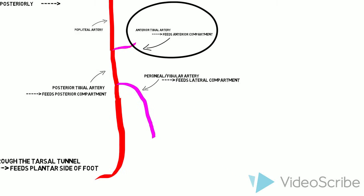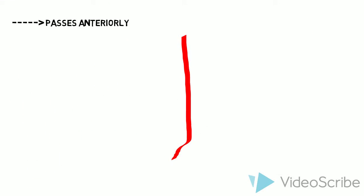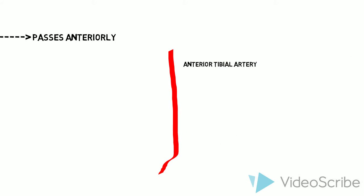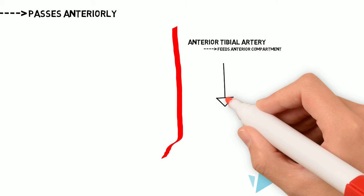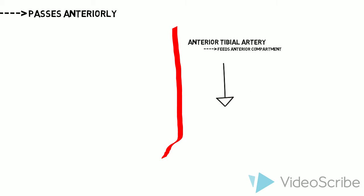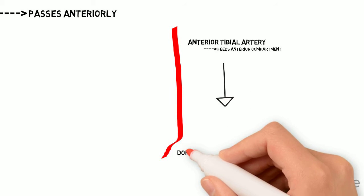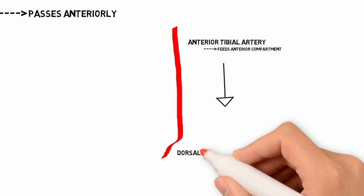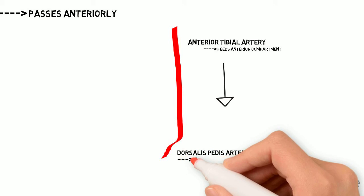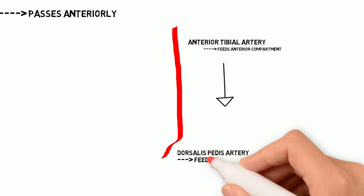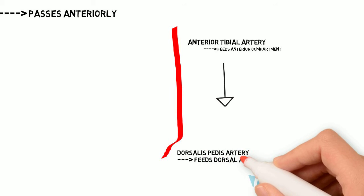The anterior tibial artery passes anteriorly to feed the anterior compartment of the leg. It goes all the way down the anterior compartment to the dorsal aspect of the foot and becomes the dorsalis pedis artery, feeding the dorsal aspect of the foot.